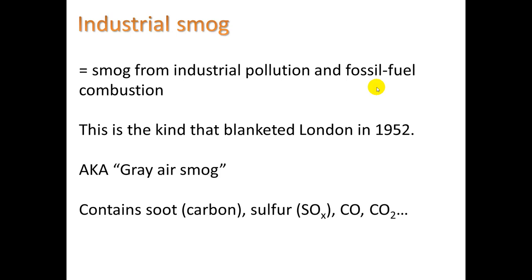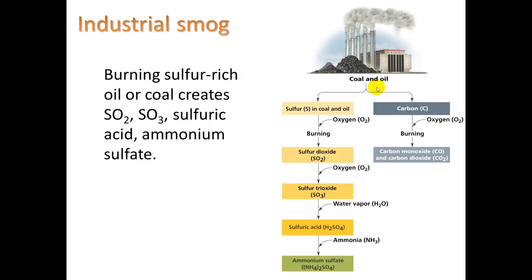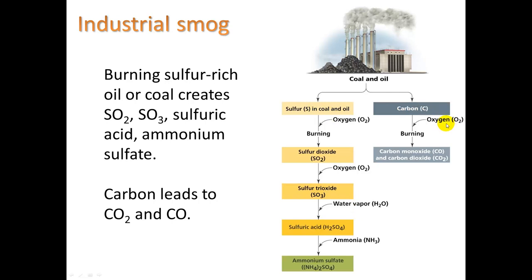Industrial smog contains soot, carbon particulates, sulfur oxides, carbon dioxide, and carbon monoxide. In this diagram, sulfur oxides can lead to sulfuric acid when combined with water vapor. When you burn carbon, it ideally combines with oxygen to produce CO2, but with incomplete combustion — not enough oxygen — you instead get carbon monoxide.